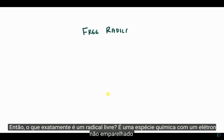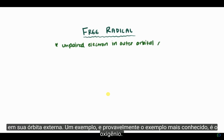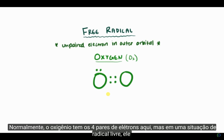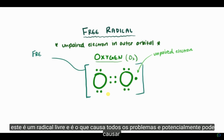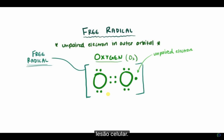So what exactly is a free radical? It's a chemical species with an unpaired electron in its outer orbit. One example, and probably the most well-known example, is oxygen. Normally oxygen has four pairs of electrons, but in a free radical situation, it might gain an extra electron. So now you've got this one unpaired electron, and we call this a free radical — it's what causes all the trouble and can potentially cause cellular injury.